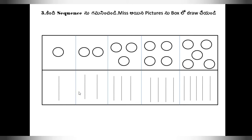Like this, the student can understand the sequence of the numbers: 1, 2, 3, 4, 5. Here also: 1, 2, 3, 4, 5. And also he will count: 1; 1 and 2; 1, 2, 3; 1, 2, 3, 4; 1, 2, 3, 4, 5.